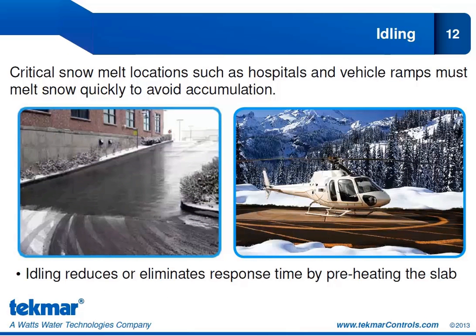Idling, as mentioned earlier, is one of the snowmelting states. With idling, we preheat the slab and keep it below freezing but high enough so that when snow is detected, we can quickly bring the slab up to the appropriate melting temperature. We would do this in areas where safety is prioritized — hospitals, vehicle ramps, helipads like shown here — where we want to melt snow quickly and avoid accumulation. The degree of idling depends on what we call the snow-free area ratio, which we'll look at next.